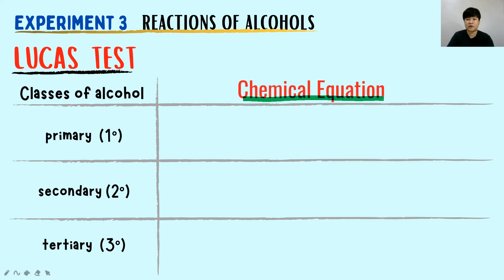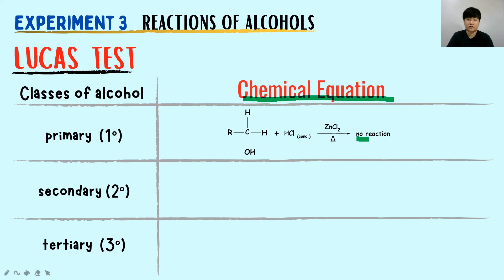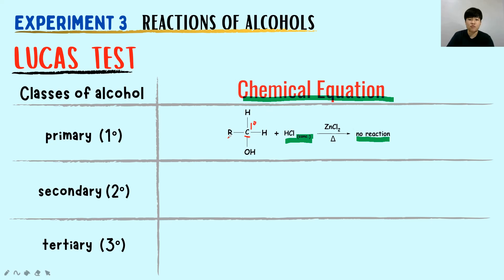For the chemical equation of primary alcohol in the Lucas test: there is no reaction — that's why there is no cloudy solution formed. Note that you must include the word 'concentrated' for HCl in your equation. This is a primary alcohol because the carbon holding OH is a primary carbon, holding only one R group (one carbon group).